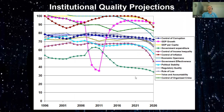The projections are trending downward in a number of ways. The blue diamonds represent control of corruption, and while control of corruption is fairly good in Ireland, it is slightly trending downwards. Other institutions are trending downwards as well.